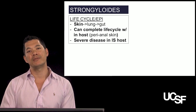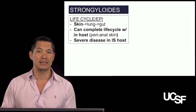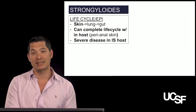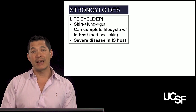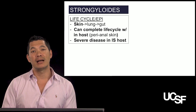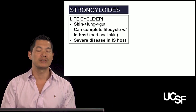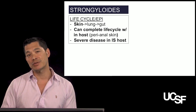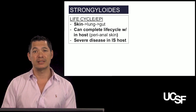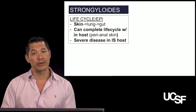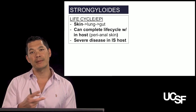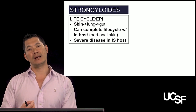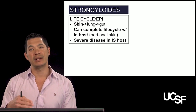As eggs hatch into larvae and come out through the anal area, they can also go back into the body through the perianal area, back to the lungs and all parts of the body. In an immunocompromised host, this can be quite severe with very disseminated disease.